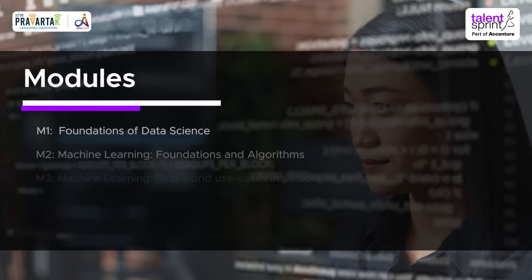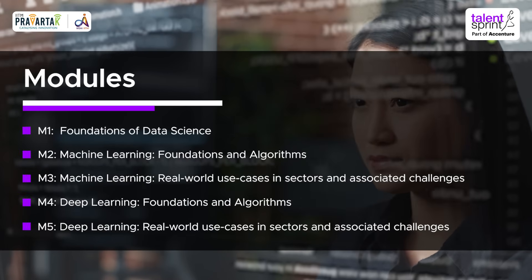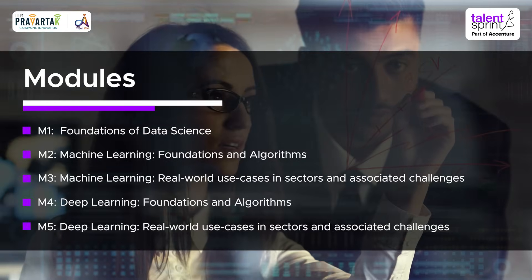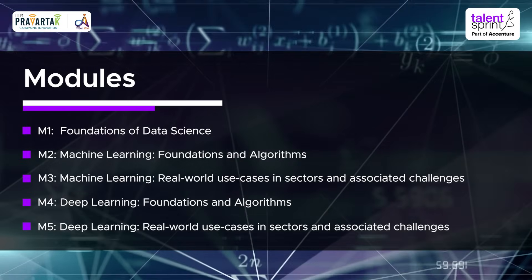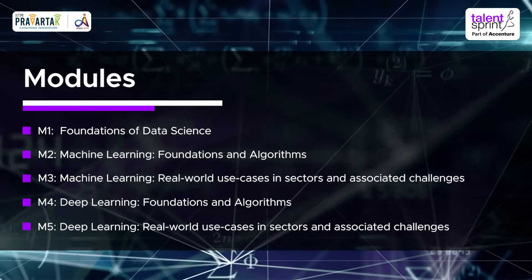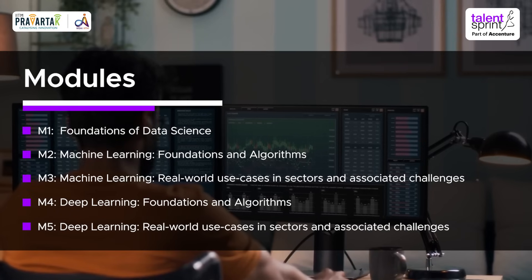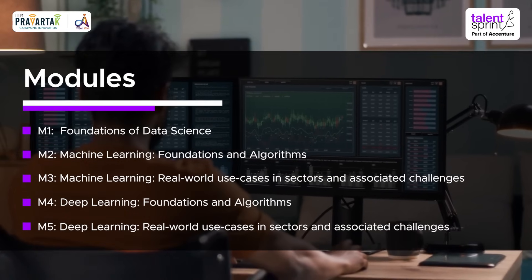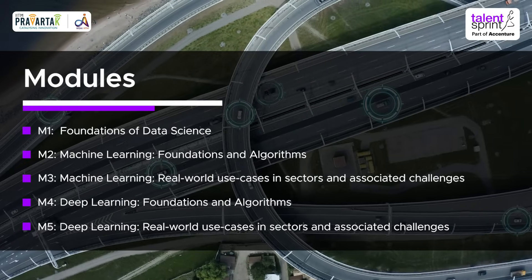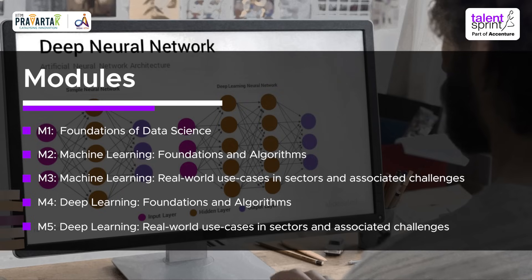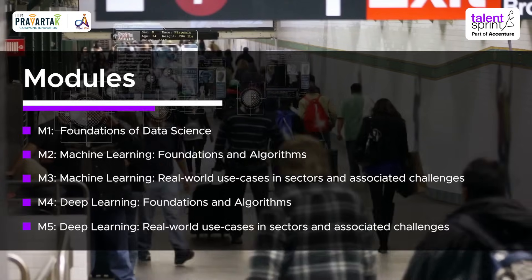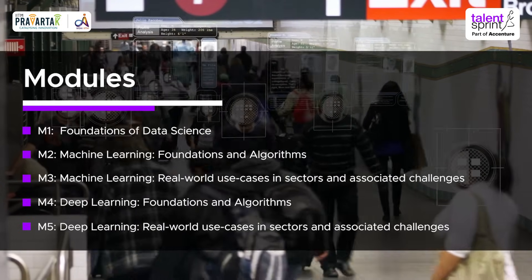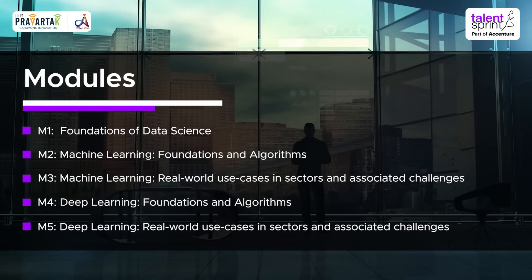This course has five modules. The very first module is a bridge module titled Foundations of Data Science, which covers essential mathematics and coding concepts. Module 2 is Machine Learning Foundation and Algorithms, where you will learn the fundamentals of machine learning algorithms. Module 4 is Deep Learning Foundation and Algorithms, where you will learn the foundations of advanced AI algorithms such as neural networks.